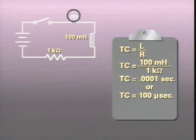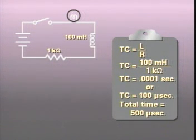The current in this circuit, therefore, will grow in stages of 100 microseconds for each time constant until it reaches its practical maximum of 1 ampere after five time constants, 500 microseconds.